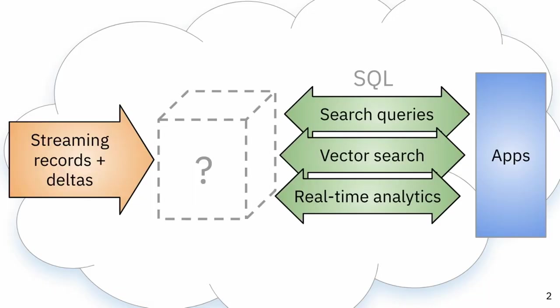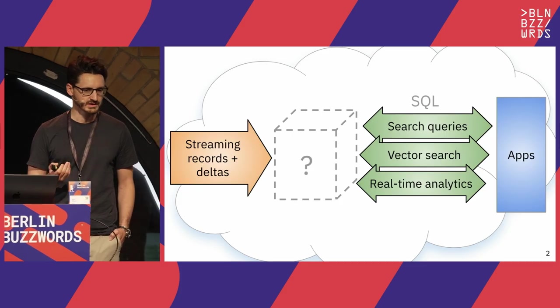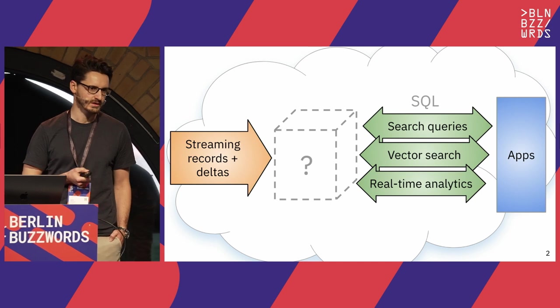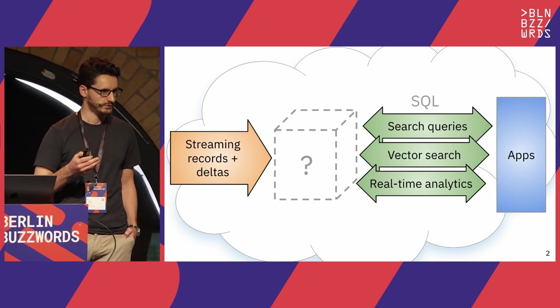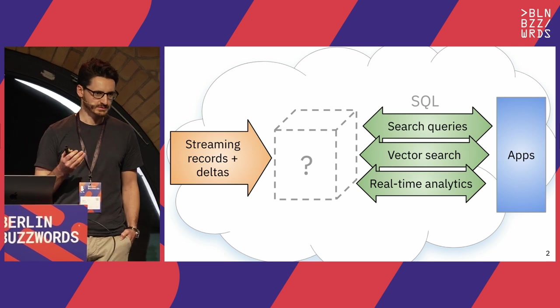The system we will design today — this question mark box is the system we are trying to design. The system receives updates from a stream. This could be either document insertions or document mutations. The system should store the data and provide a SQL interface on top of the data, where queries could be either search queries — meaning we'll probably want to build some sort of inverted index.